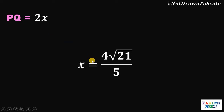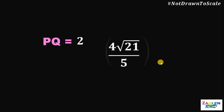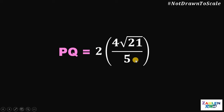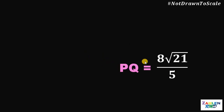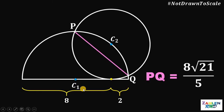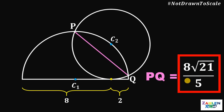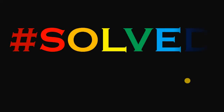Since we want 2 times x, the length of PQ equals 2 times (4 times square root of 21 over 5), which simplifies to 8 times the square root of 21 over 5 units. And as always, we are done.